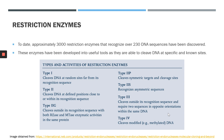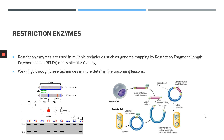Type 2G restriction enzymes have both restriction endonuclease and methyl transferase activity. Type 2P cleaves symmetric targets and cleavage sites. Type 2S can recognize asymmetric sequences. Type 4 can cleave modified DNA such as methylated DNA. Restriction enzymes can be used in multiple techniques such as genome mapping by restriction fragment length polymorphisms and molecular cloning — the two techniques we'll be discussing in more detail in upcoming lessons.